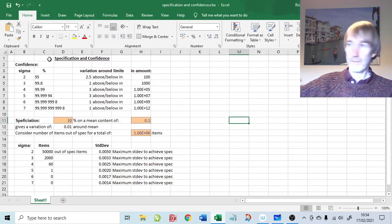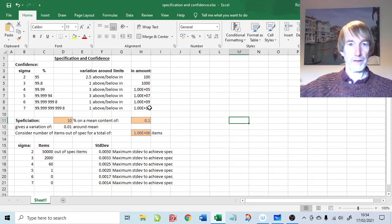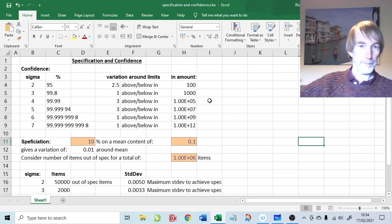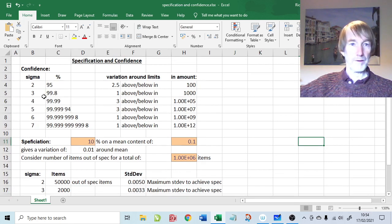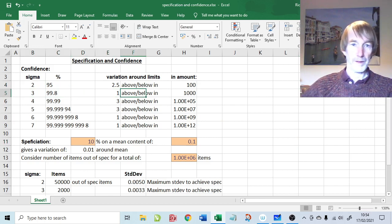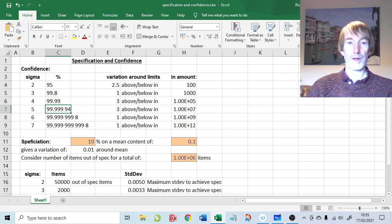If we go to this spreadsheet, it has the values of specification and confidence. Here are our sigma values. We started at the 99.8%, and that was one above and one below in a thousand. Then there's 4 sigma, which is 99.99% confidence, 5 sigma is 99.99994% of the distribution lies between 5 times the standard deviation around the mean, and there's 6 sigma and 7 sigma.